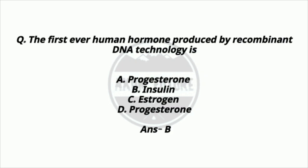Question 18. The first human hormone produced by recombinant DNA technology is? Option A: Progesterone. Option B: Insulin. Option C: Estrogen. Option D: Progesterone. Answer: Option B — Insulin.